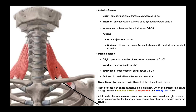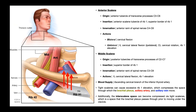So how could the anterior and middle scalenes be implicated in thoracic outlet syndrome? If you have tight scalenes — tight anterior scalene and tight middle scalene — their action is to elevate the first rib. If these two muscles are tight, there will be excessive elevation of that first rib, leading to less space and more compression of the contents in the costoclavicular space. Compression on the nerves of the brachial plexus will lead to muscle weakness and possibly muscle atrophy in muscles innervated by those nerves.